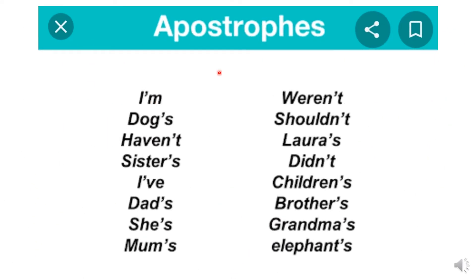Here are some more examples we use apostrophe with. See: I am, dog, haven't, sisters, I have, dad, she is, mom's, weren't, shouldn't, Laura's, didn't, children's, brothers, grandmas, elephants.